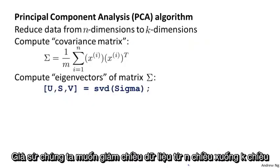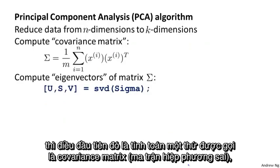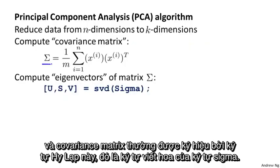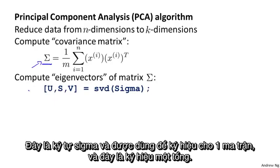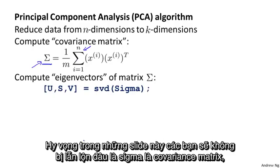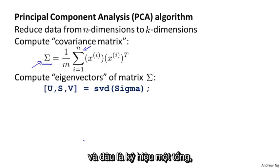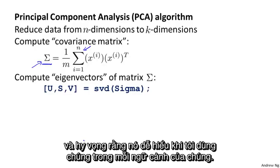Here's the procedure. Let's say we want to reduce the data from n dimensional to k dimensional. What we're going to do is first compute something called the covariance matrix, commonly denoted by the capital Greek letter sigma. It's a bit unfortunate that sigma looks exactly like the summation symbol, but hopefully from context it will be clear when I'm using sigma as the covariance matrix versus as a summation symbol.